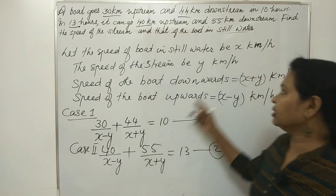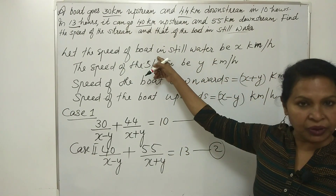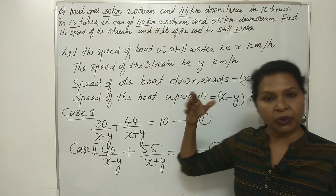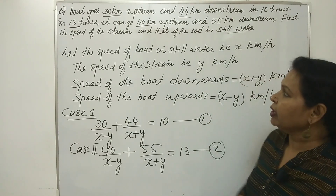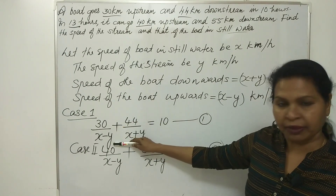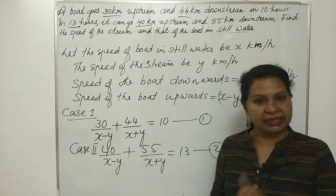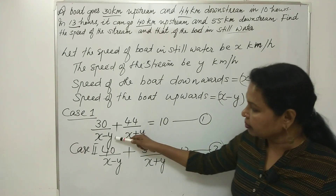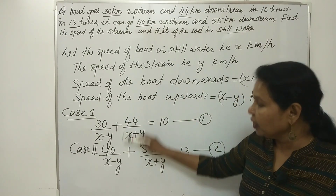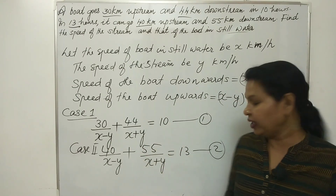We have defined two variables: speed of boat in still water is x km per hour, and speed of stream is y km per hour. Speed downstream is x plus y and speed upstream is x minus y. First case: 30 divided by (x minus y) plus 44 divided by (x plus y) equals 10 hours. Second case: 40 divided by (x minus y) plus 55 divided by (x plus y) equals 13 hours.